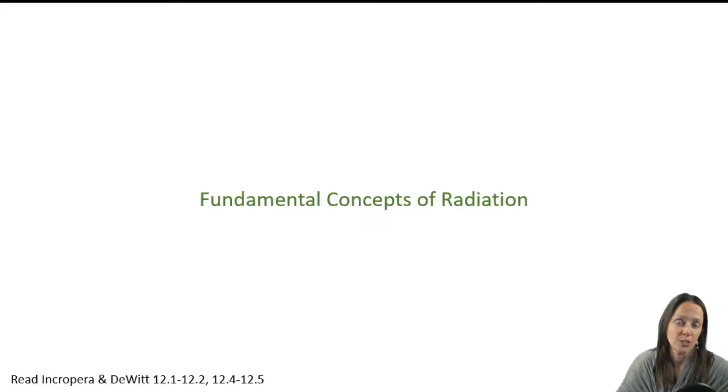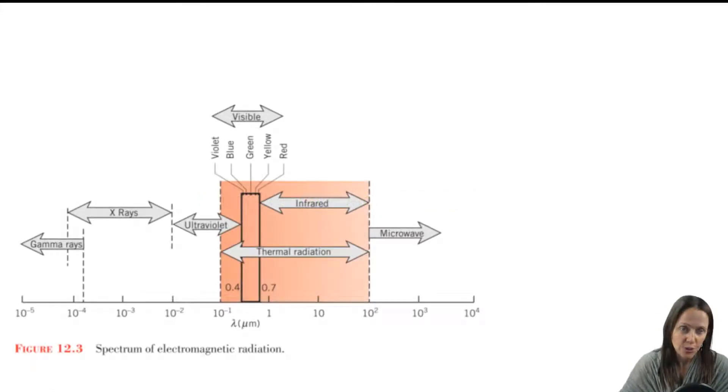You can skip the section on intensity which deals with directional effects. So we've talked about radiation in very general terms. The official definition is that thermal radiation is electromagnetic radiation that's emitted by a body due to its temperature. We also said that thermal radiation is unique in that it doesn't need matter. It can occur in a vacuum, and that's not the case for conduction and convection.